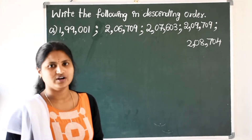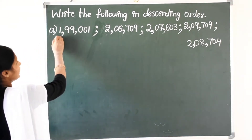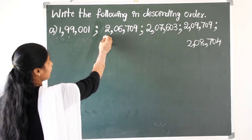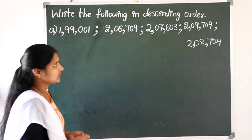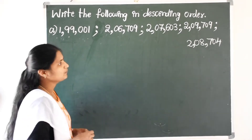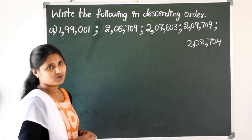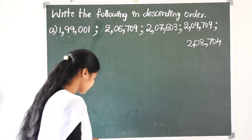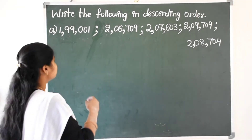Descending Order. Okay, here we are having large numbers. So, we have to arrange these large numbers in descending order. See here.